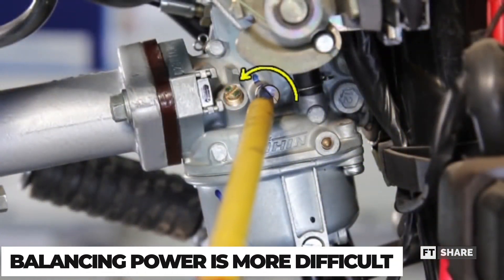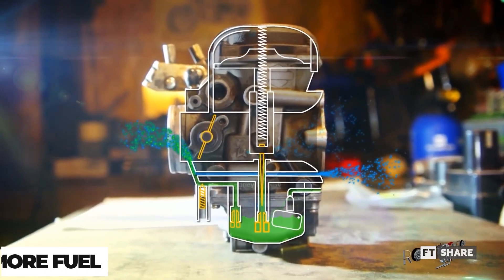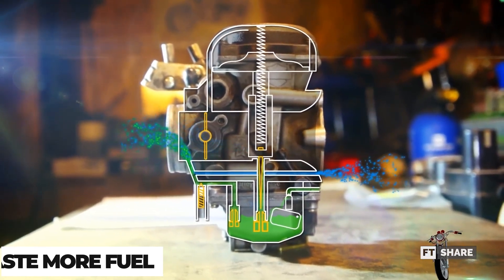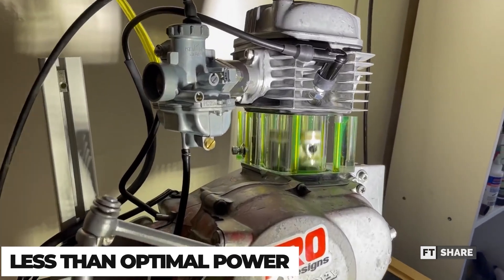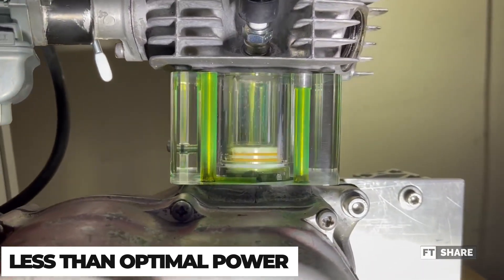The second is that it's harder to find the right balance between power and fuel efficiency. The third is that it tends to waste more fuel compared to injection under the same standard conditions. And the fourth is less optimal power in some engine speed conditions because the carburetor settings are fixed.